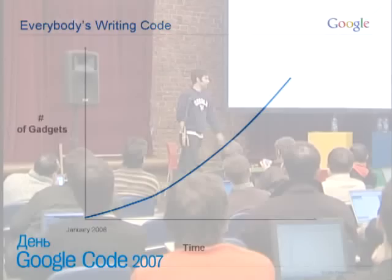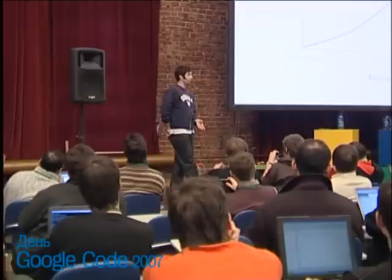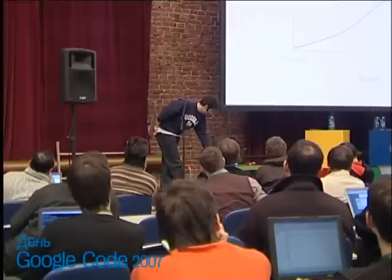As time goes on, the number of gadgets being built goes up because more and more people are developing them. In fact, we've got about 20,000 gadgets built so far, just over. That's a lot of gadgets, that's a lot of great content out there. But at the moment it's kind of restricted to one place, which is iGoogle and the places which can also embed it.